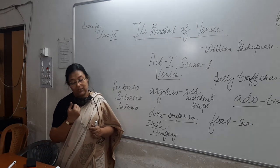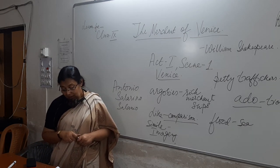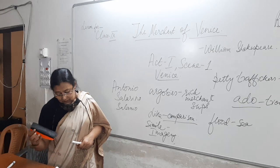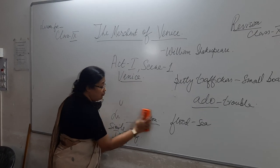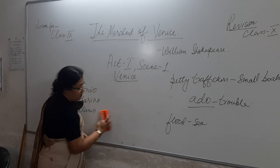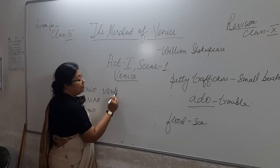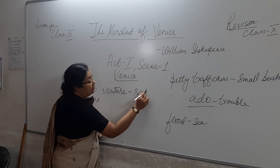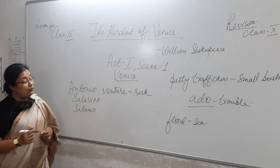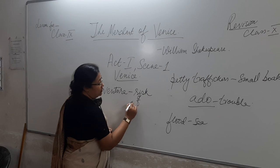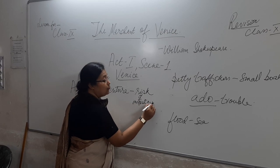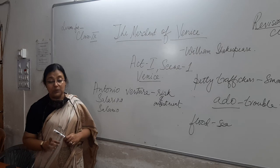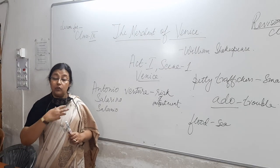So Salenio continues with what Salerino has said. He says 'Believe me sir, had I such venture forth' — it is nothing surprising that you are worried. Salenio is saying: believe me sir, if I had such venture — venture here means investment and the risk involved in it. It is like a risk, something you undertake without knowing what will be the consequence. If I had such risk of investment, 'the better part of my affections' — affections means feelings, better part means most of my thoughts and feelings.